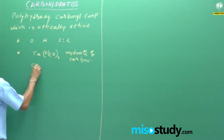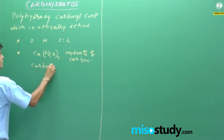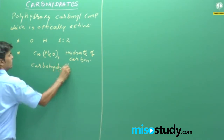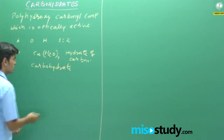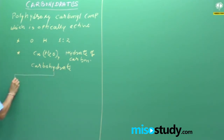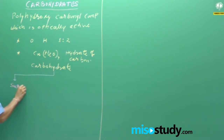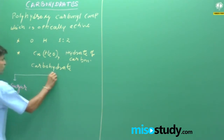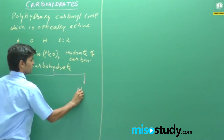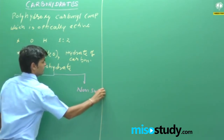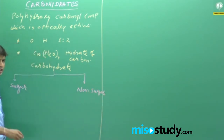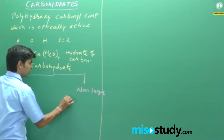For the classification of carbohydrates, the first classification is sugars and non-sugars. In the non-sugar category we can see the polysaccharide category.